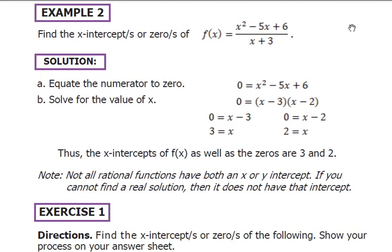For Example 2, we find the x-intercepts of f(x) equals (x squared minus 5x plus 6) all over (x plus 3). By inspection, set the numerator equal to 0. In this case, it's a quadratic expression that we have to factor out. You know the factors of this.